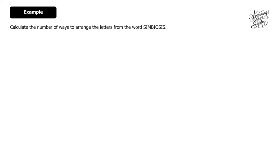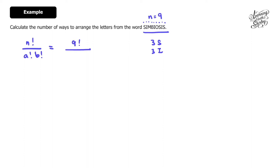Let's look at this example: calculate the number of ways to arrange the letters from the word 'symbiosis'. First, count how many letters there are — there are 9 letters. Then we check for any repeated letters: there are 3 S's and 3 I's. So we use the formula: 9 factorial over 3 factorial times 3 factorial, which gives us 10,080 ways.